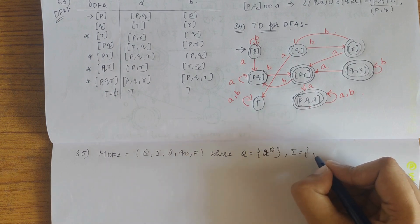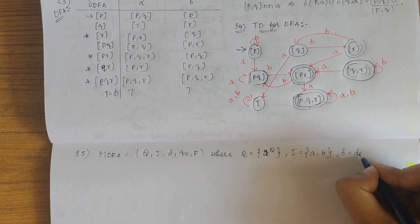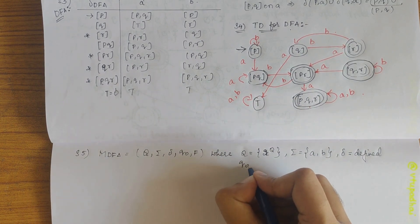Then we have sigma, the total alphabets or strings used here, those are a and b. Then transition function is defined in above steps. Then we have q naught.